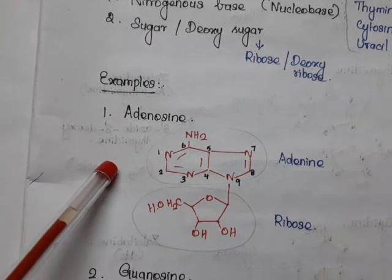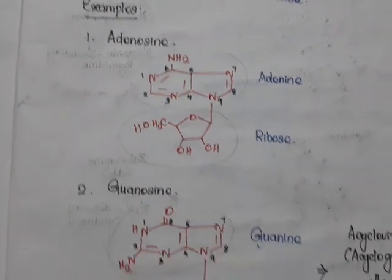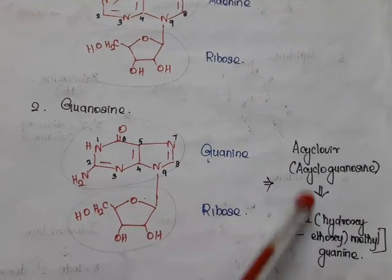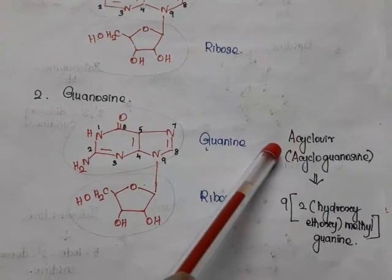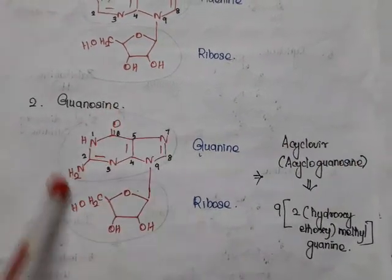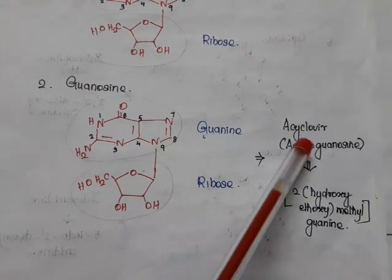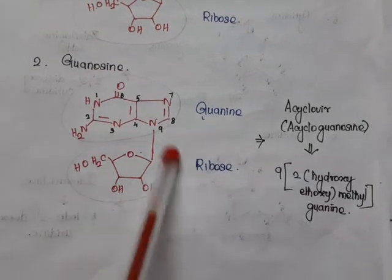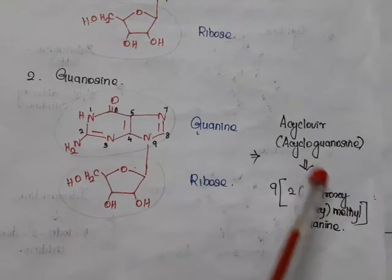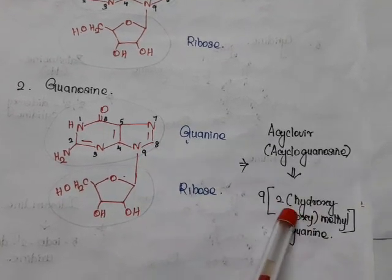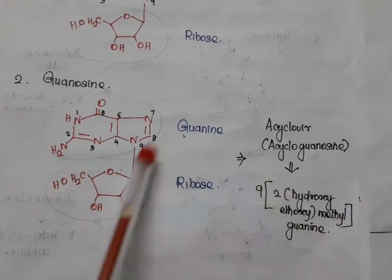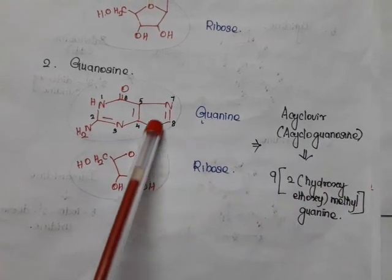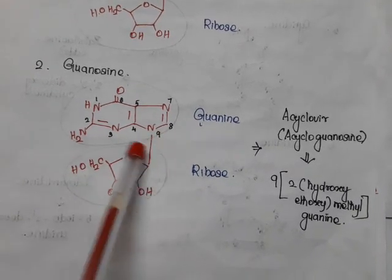Now we'll see how nucleotides are related to antiviral agents. We have known that guanosine is guanine with ribose. Acyclovir is otherwise called acycloguanosine. In guanosine, the ribose ring is replaced by an acyclic chain. The chemical name is 9-(hydroxyethoxymethyl)guanine — guanine is there, and at the ninth position of guanine we have a hydroxyethoxymethyl group. That is acyclovir.